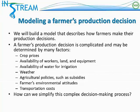Some of these factors may include the price of the crop or crops that the farmer is able to plant, the availability of workers, land, and equipment on the farm, the availability of water to irrigate the crops, the weather on the farm, any agricultural policies that may affect the farm such as subsidies, a farmer's environmental attitudes, and transportation costs.